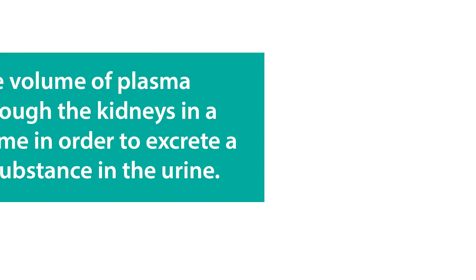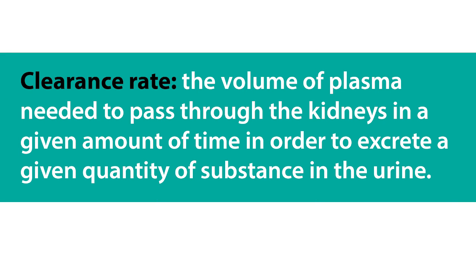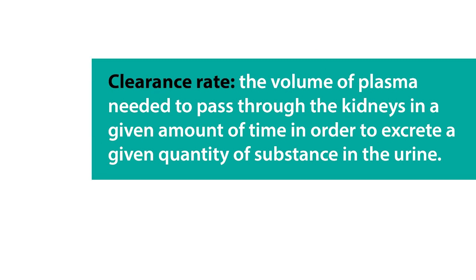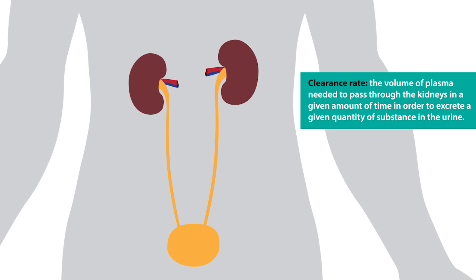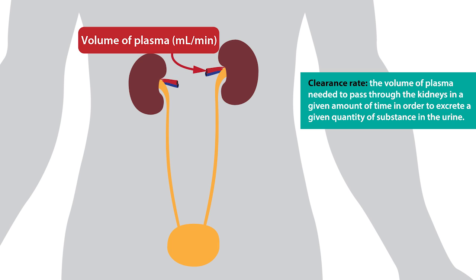Clearance or clearance rate of a substance is defined as the volume of plasma needed to pass through the kidneys in a given amount of time in order to excrete a given quantity of that substance in the urine, and it's typically expressed in milliliters per minute.